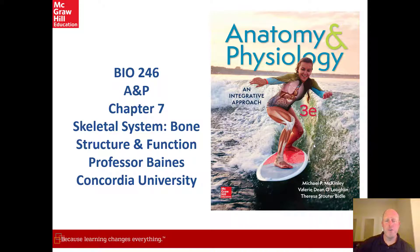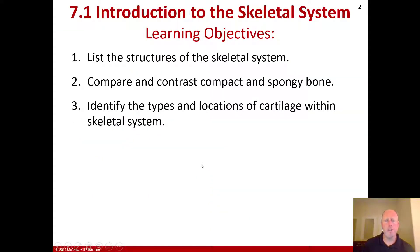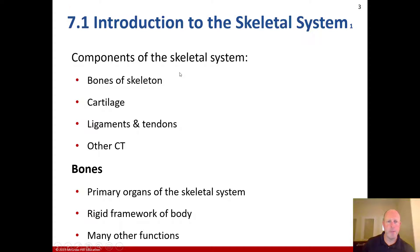Welcome to Chapter 7 of BIO 246, Anatomy and Physiology on the Skeletal System. For the first section, we need to be able to list the structures of the skeletal system, compare and contrast compact and spongy bone, and identify the types and locations of cartilage within the skeletal system.